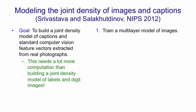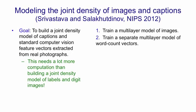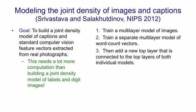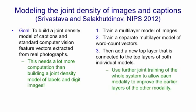So what they did was they first trained a multi-layer model of images alone — that is, a multi-layer model of the features extracted from images using the standard computer vision features. Then separately, they train a multi-layer model of the word count vectors from the captions. Once they've trained both of those models, they add a new top layer that's connected to the top layers of both of the individual models. After that, they use further joint training of the whole system so that each modality can improve the earlier layers of the other modality.